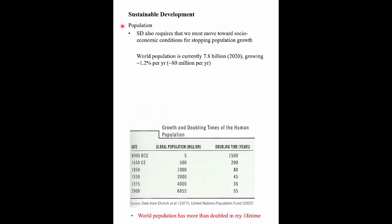It's hard to talk about sustainable development without talking about world population. This is a little bit out of my specialty as a mechanical engineer, but sustainable development requires moving to a socioeconomic condition that stops world population growth. Our current population is about 7.8 billion, and we're growing at about 1.2%, or 80 million people a year — more than double the population of Canada worldwide every year. The deaths from COVID-19 — around 1.2 million — won't make a dent on the rise of world population.